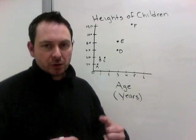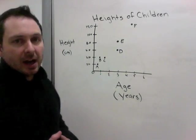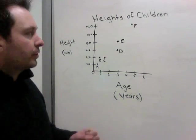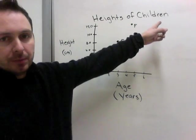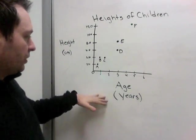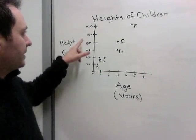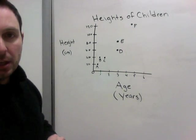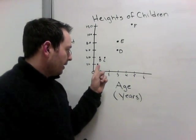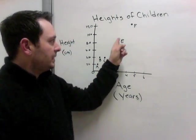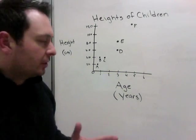Now we're going to start gleaning some information from graphs. So looking at this graph, first thing you should do is always read the graph's title. Heights of children. And then look at the axes. We have children ages 0 to 6, and heights from 0 to 120 centimeters. So, you have person A, B, C, D, E, and F. Each person's being labeled here, or each child.